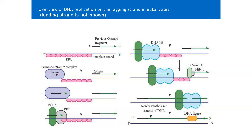The addition of deoxyribonucleotides occurs uninterrupted on the leading strand until it reaches the termination signal. However, replication on the lagging strand is discontinuous since it is synthesized as Okazaki fragments. Once the synthesis of an Okazaki fragment is completed, the RNA primer is removed by two enzymes: RNase H and FEN1, that is Flap Endonuclease 1.